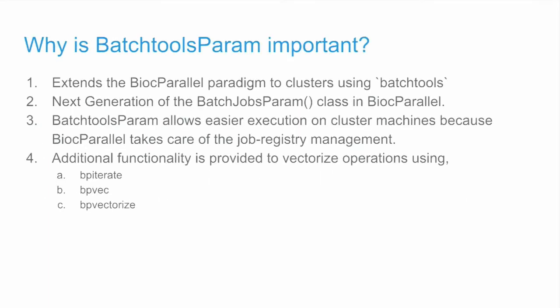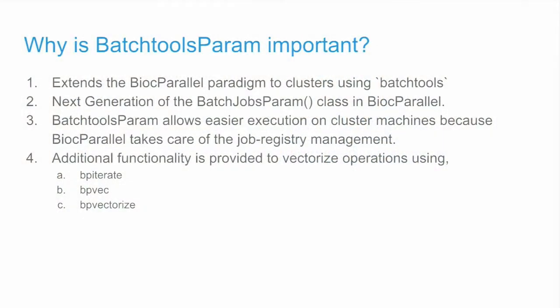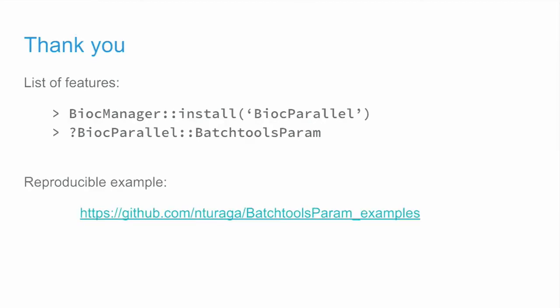So why is this BatchToolsParam important? It's because it extends the BiocParallel paradigm to clusters using batchtools as the package behind it. It's the next generation of the batch jobs parameter, if anybody has used that before. It takes care of all the job registry management instead of the user taking care of that. It also provides additional functionality to vectorize operations using functions like bpvec, bpvectorize, and bpiterate. There's a full list of features, and you can install the package using these two functions and look at the examples.